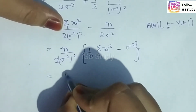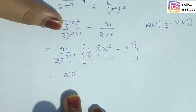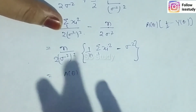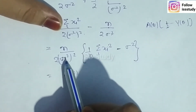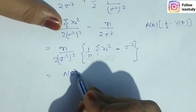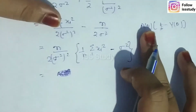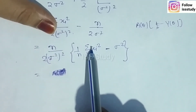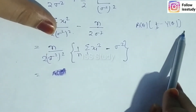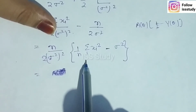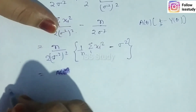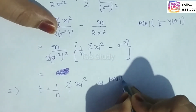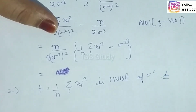Comparing with the Cramér-Rao / MVB inequality form A(σ²)[T − γ(σ²)], we identify that T = (1/n)Σxi² and γ(σ²) = σ². Therefore, we can finally say that T = (1/n)Σxi² is the MVB estimator of σ², which is our answer.